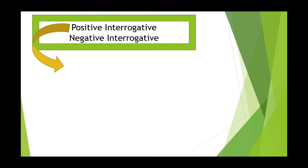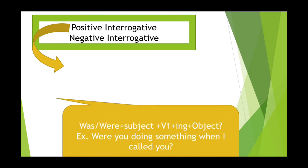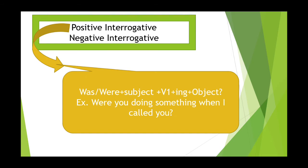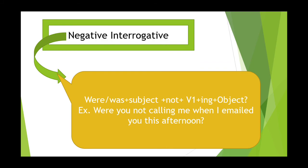Next, we have two kinds of interrogatives: positive interrogative and negative interrogative. To make a positive interrogative, we use: was/were + subject + first form verb + ing + object. For example: 'Were you doing something when I called you?' — 'you' takes 'were'. To make a negative interrogative, use: was/were + subject + not + first form verb + ing + object + question mark.